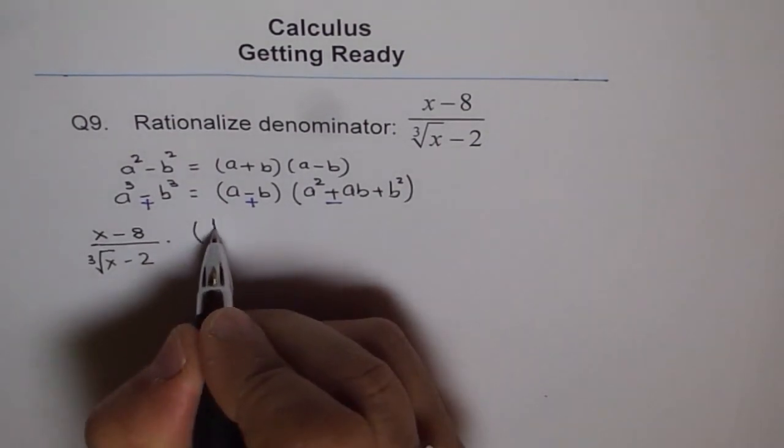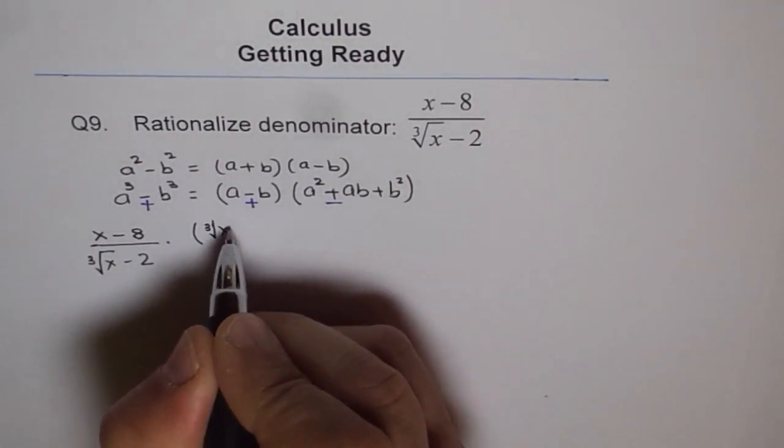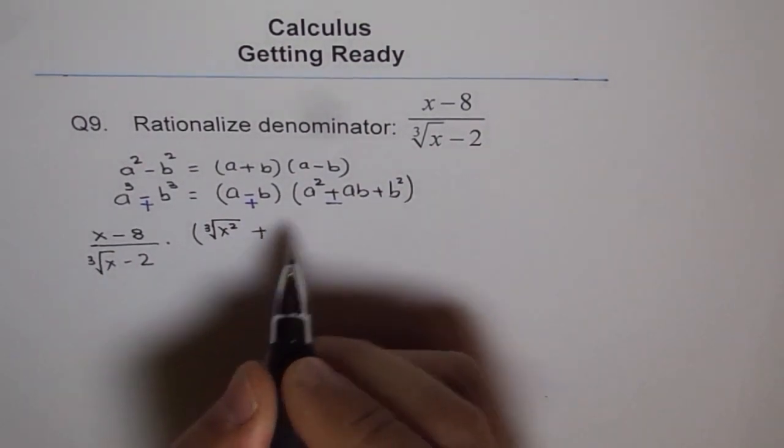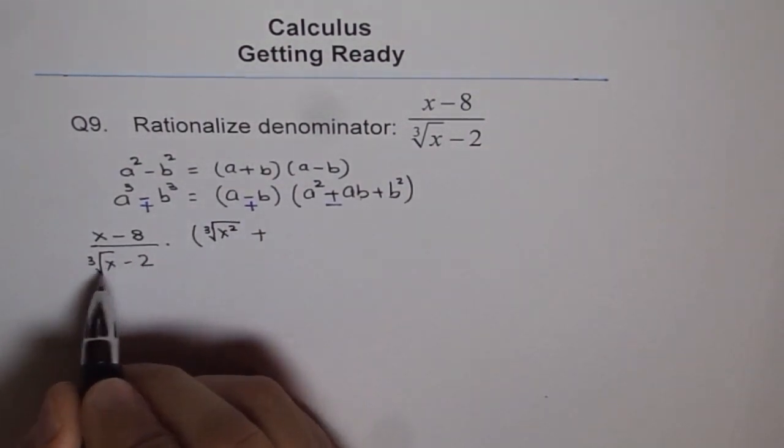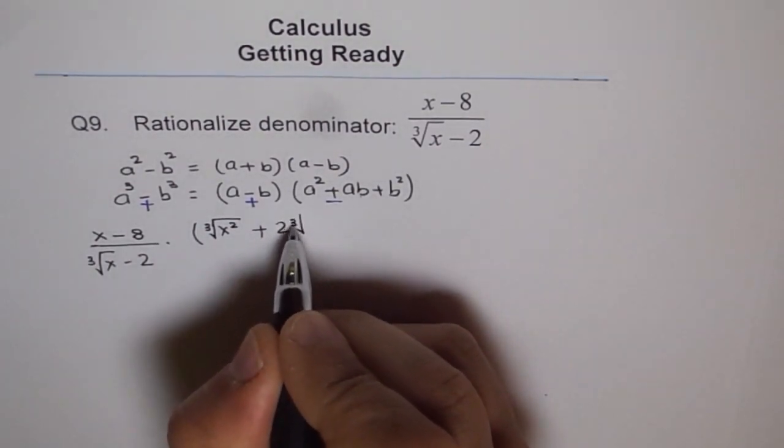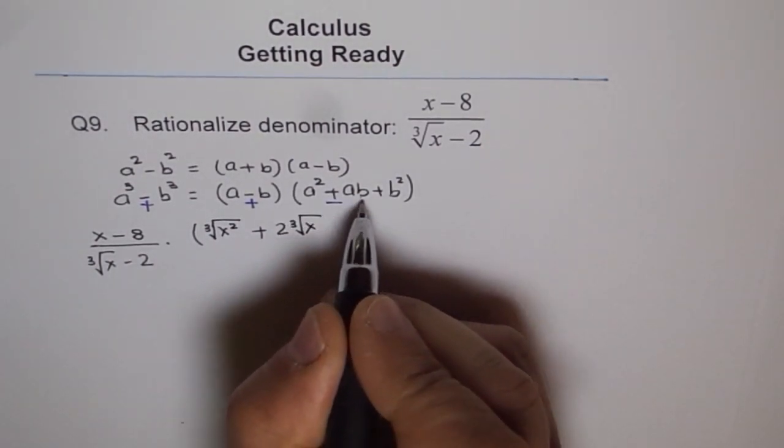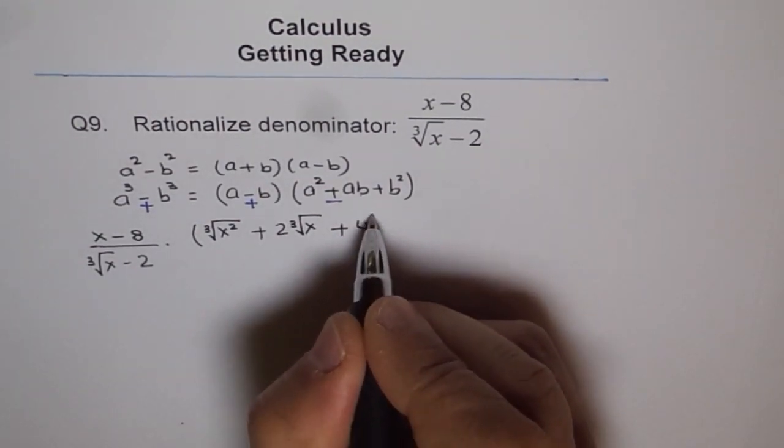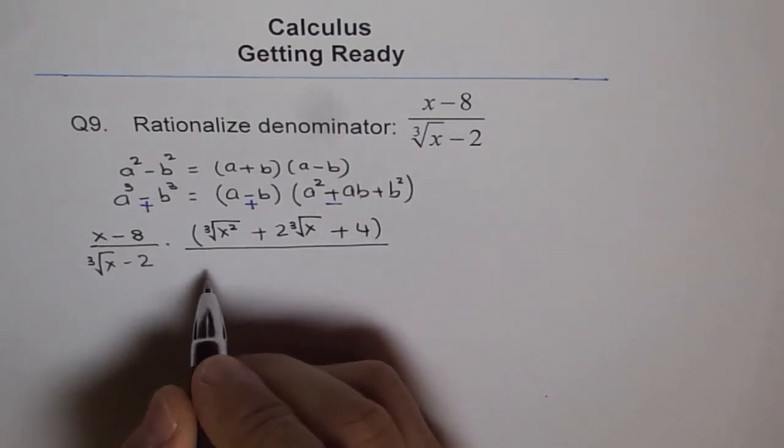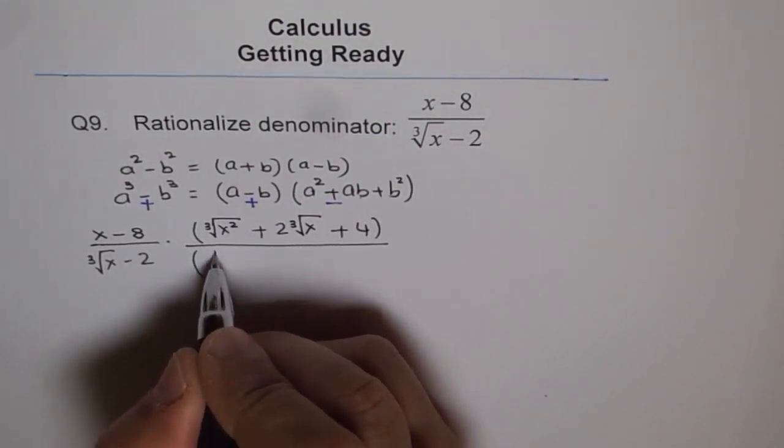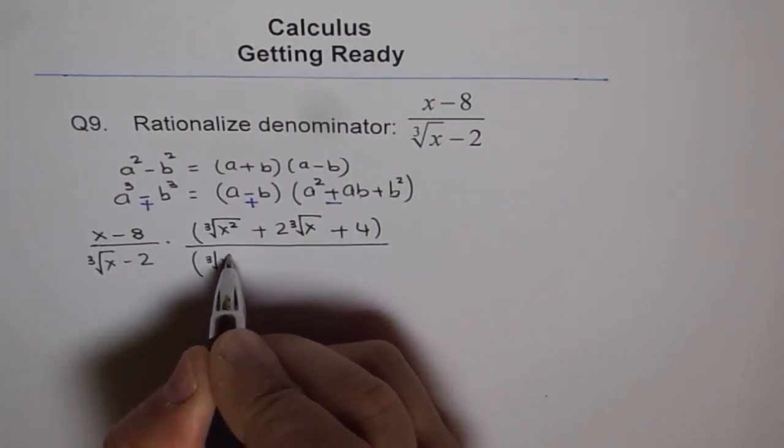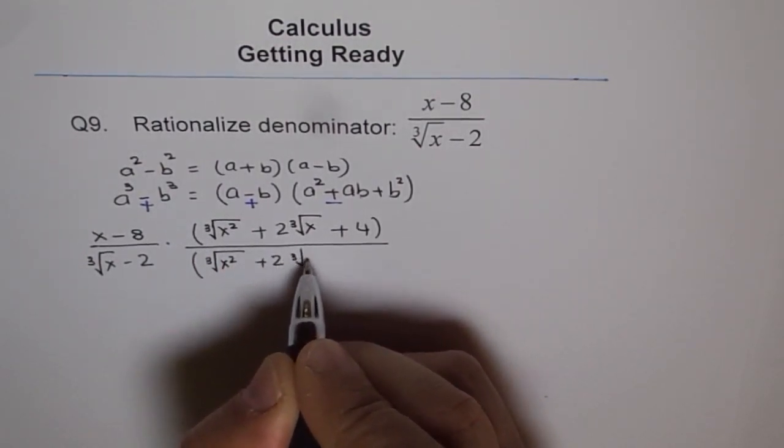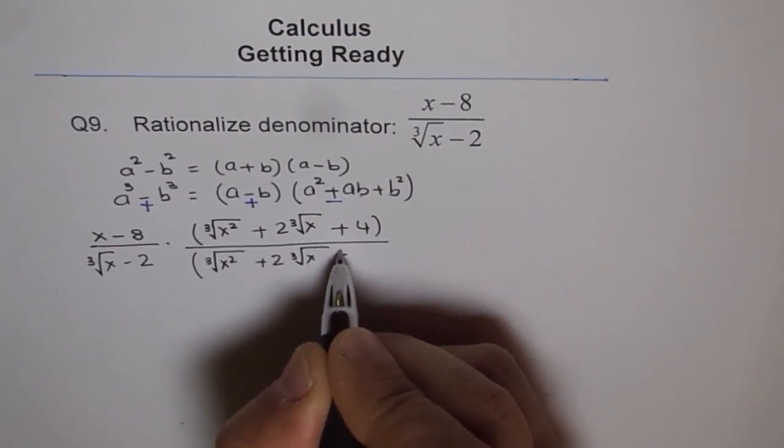Now, square of this will be cube root x square. We are writing square of this plus ab, that means 2 times cube root of x, that is ab, plus b square, which is 4, 2 square, divided by the same thing. So, we will divide by cube root of x square, plus 2 times cube root of x, plus 4.